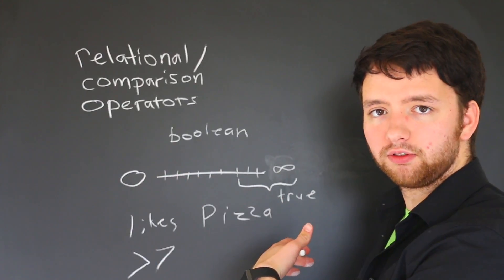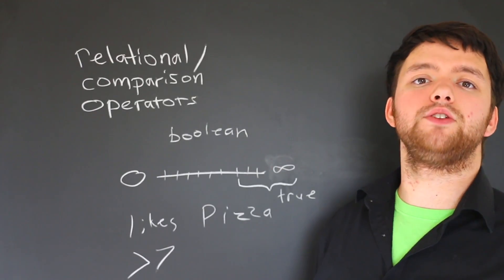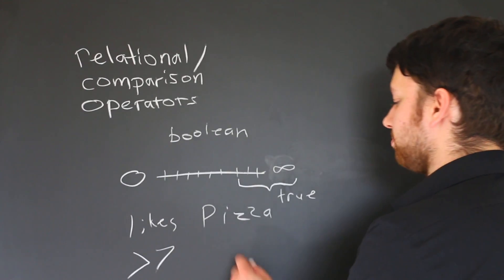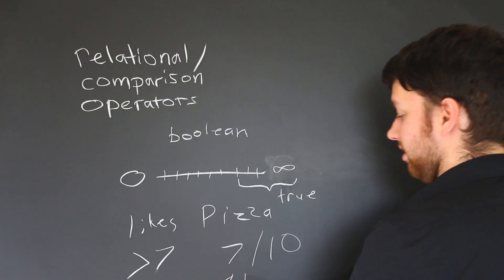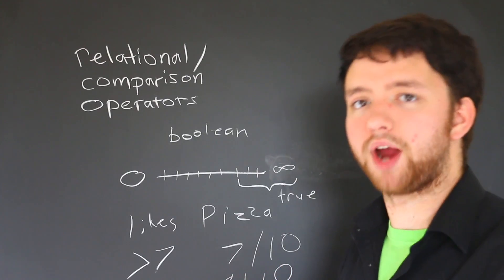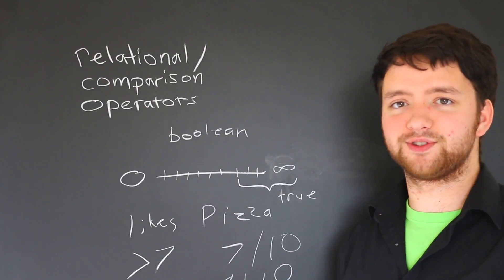Rather than just true or false, like you like pizza or you don't like pizza, now we have a range. So a person who likes pizza seven out of ten likes pizza, a person who likes pizza eight out of ten likes pizza. I know this example is like the most practical example you're probably ever going to use in your life.